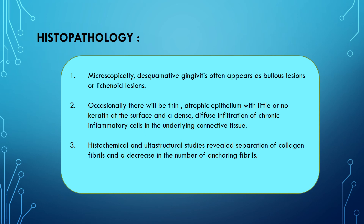In histopathology, microscopically, Desquamative Gingivitis often appears as bullous lesions or lichenoid lesions. Occasionally there will be a thin atrophic epithelium with little or no keratin at the surface, and diffuse infiltration of chronic inflammatory cells in the underlying connective tissue. Histochemical and ultrastructural studies reveal separation of collagen fibres and a decrease in the number of anchoring fibres.